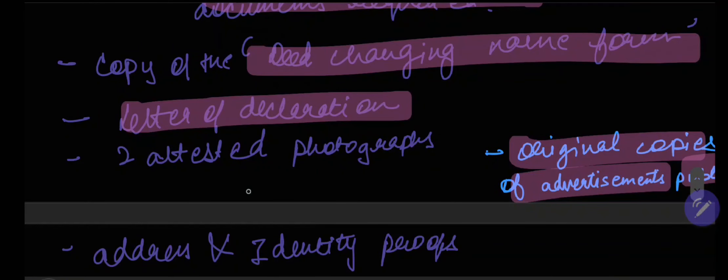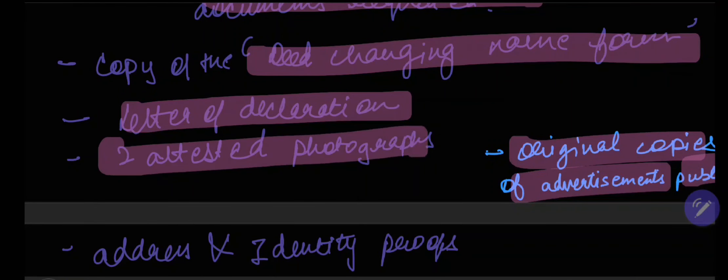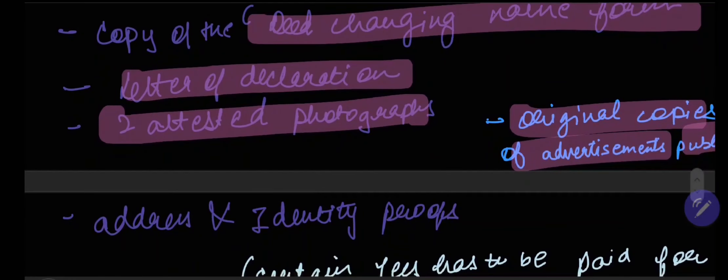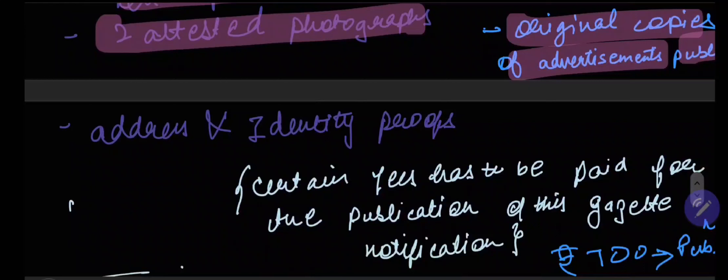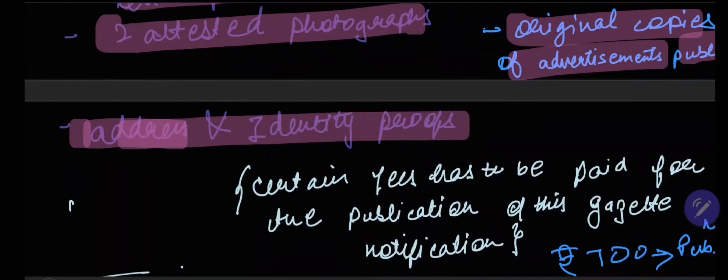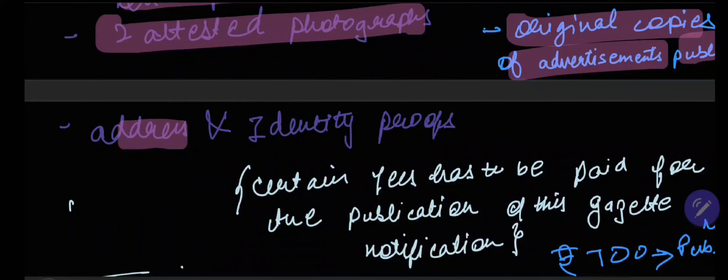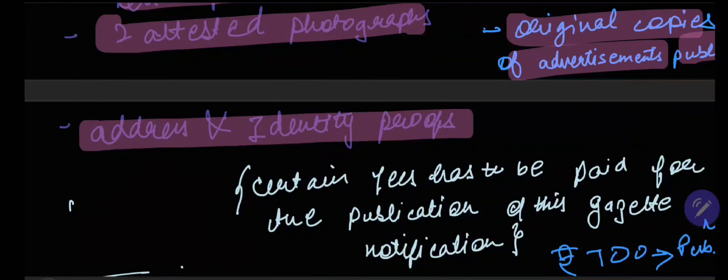You need to have two attested photographs. To ensure that you go ahead with the procedure smoothly, you need to have your address and identity proofs. And these proofs need to be the same as published in the newspaper and the affidavit.